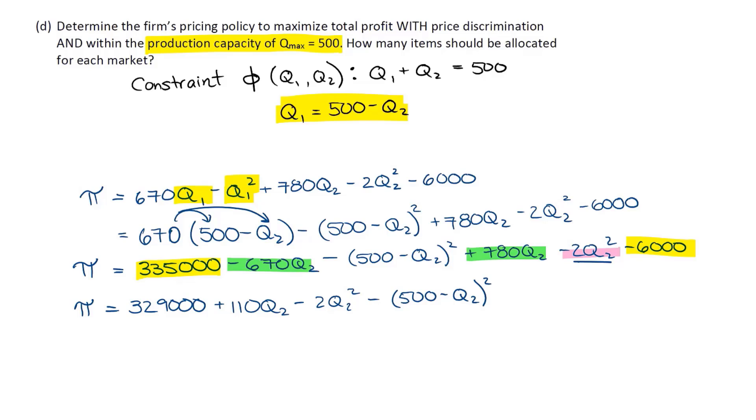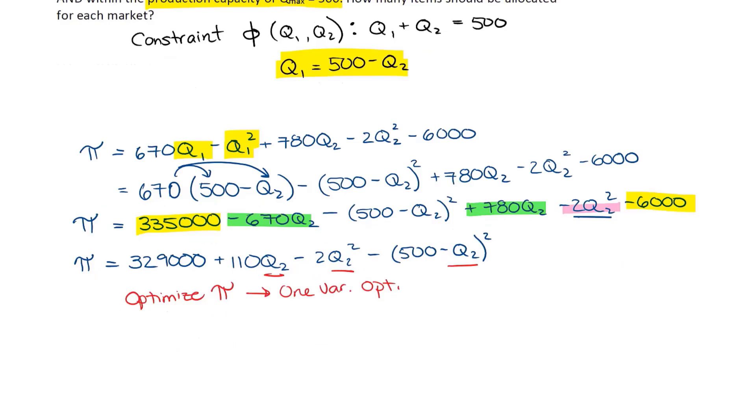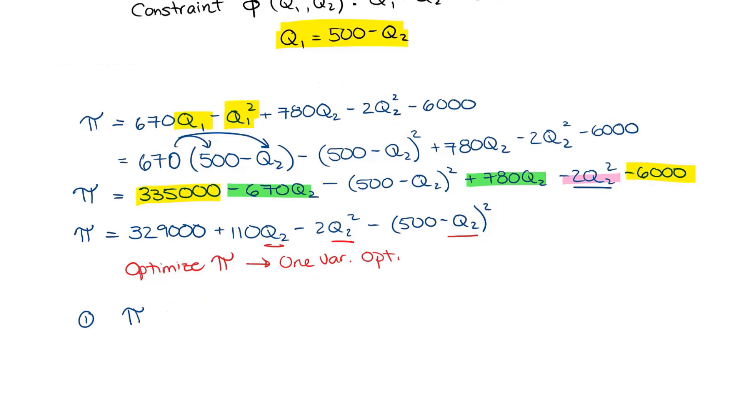So now I have a profit function that is a function of one variable. To optimize this, I'm going to use one variable optimization, the stuff before the midterm, lecture four. Step one for doing one variable optimization is to get the first derivative with respect to Q2.